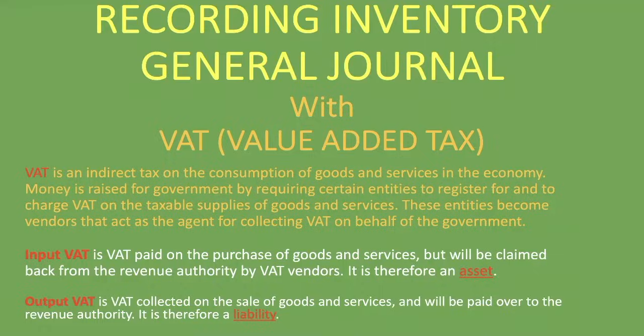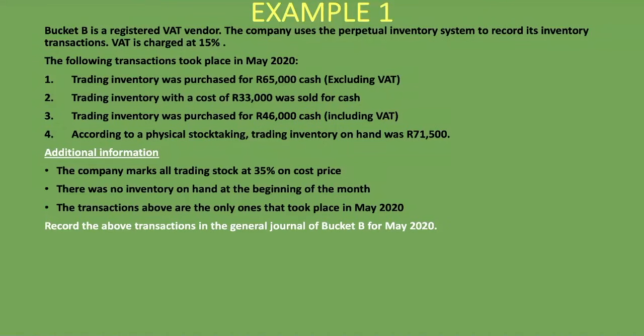Let's go through an example. Bucket B is a registered VAT vendor. The company uses the perpetual inventory system to record its inventory transactions. VAT is charged at 15%. We also have a periodic inventory system lesson with the same journal entries — you'll find the link in the description below. The following transactions took place in May 2020.